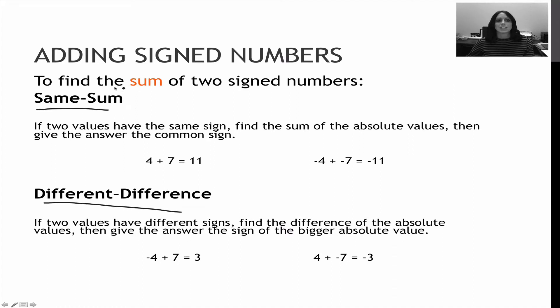Same sum means if I have two values and I'm finding the sum, meaning I'm adding them together, and the values are the same sign, I'm going to add those values together and give it the common sign. Notice here I have 4 and 7, that adds to 11. Over here, negative 4 and negative 7, those have the same negative sign. I add 4 and 7 to get 11 and give them the same sign, negative.